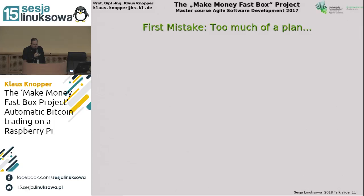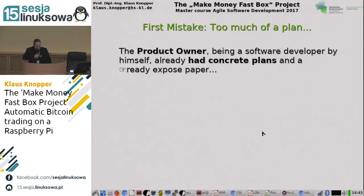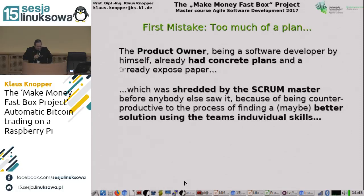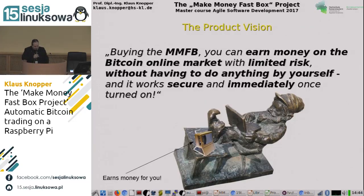We very early reached the state where we decided everything must be open and changeable by the public. My first mistake, being a developer myself: too much of a plan. I already had concrete plans and a ready exposé paper, happy to deliver it to the students. This was then shredded by the scrum master in anger, because it would be counterproductive to finding a better solution using the team's individual skills. He said: just give the idea, no concrete implementations — just what do you, as product owner, expect this box to do? Which is kind of hard for me, as I always try to give technical recommendations. So we started with a new product vision.